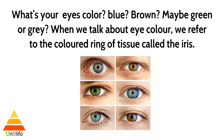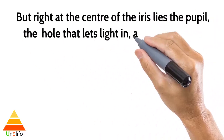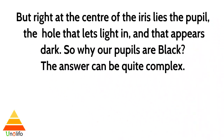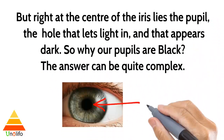When you talk about eye color, we refer to the colored ring of tissue called the iris. But right at the center of the iris lies the pupil, the hole that lets light slide in, and that appears dark.